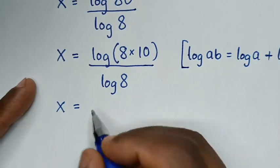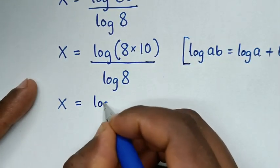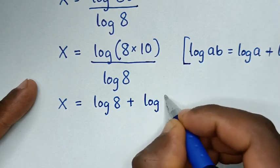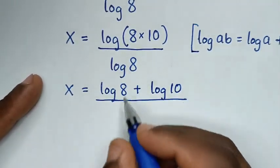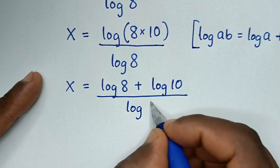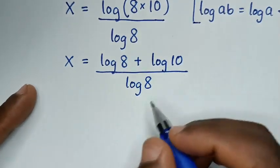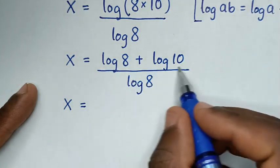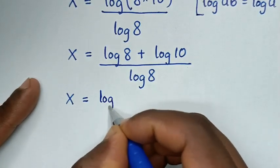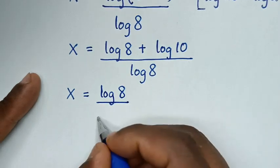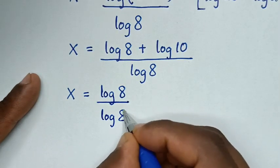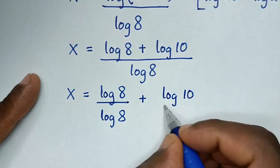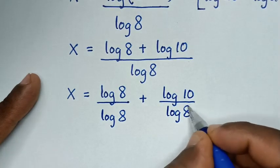So into here log of 8, it will be log of 8, then plus log of 10, over this log of 8. Then in the next step it will be x is equal to — we'll divide by log of 8 in here and here, so it will be log of 8 over log of 8 plus log of 10 over log of 8.